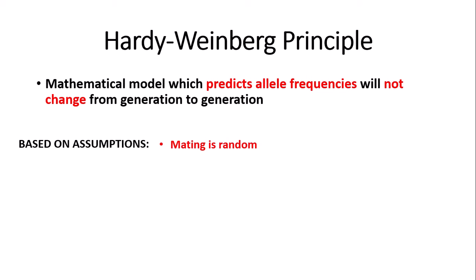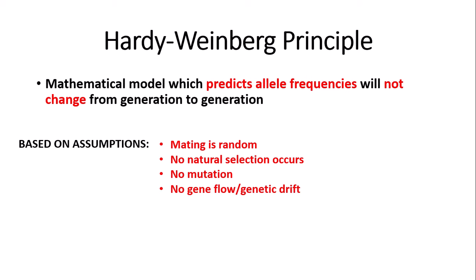The main assumptions are that mating is random — not biased towards a specific phenotype — no natural selection occurs, which would change allele frequency as individuals with certain phenotypes are selected for. No mutation occurs, which would affect the alleles. No gene flow or genetic drift — we'll get onto genetic drift when we cover the populations and ecosystems chapter. And the population size is infinite.